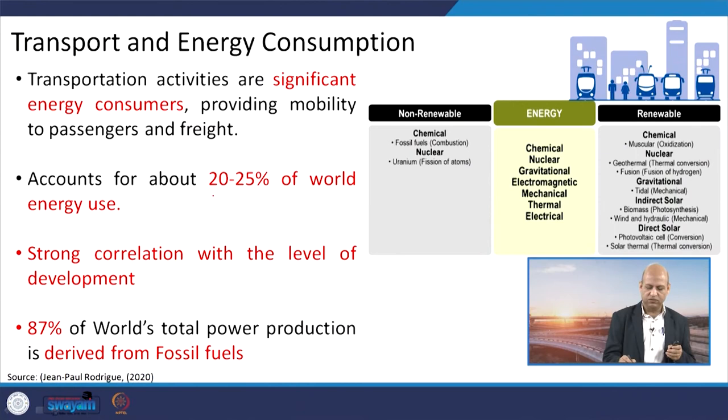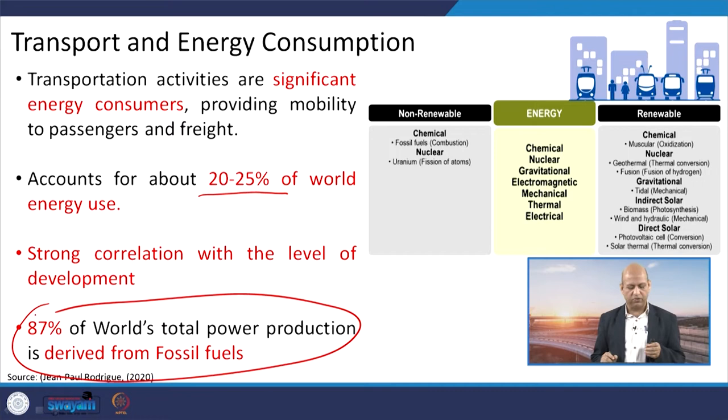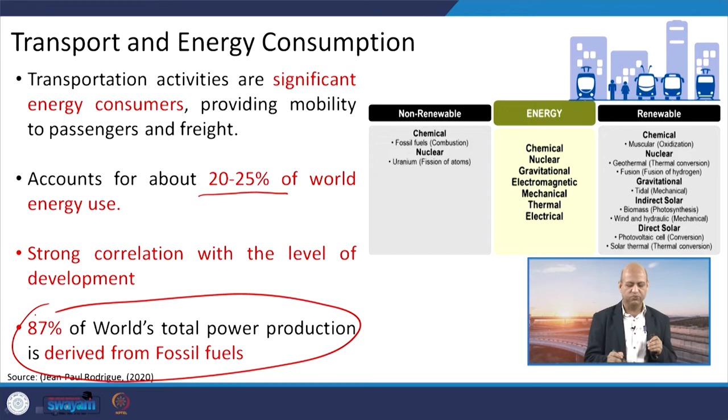Transport is driven by energy of any sort. If we are walking, we use our own energy derived from food through oxidation at the cell level. If we use fossil fuel-based energy systems such as IC engines, energy is required for mobility. Around 20 to 25 percent of world energy use is related to the transportation sector, and 87 percent of the world's total power production is derived from fossil fuels.